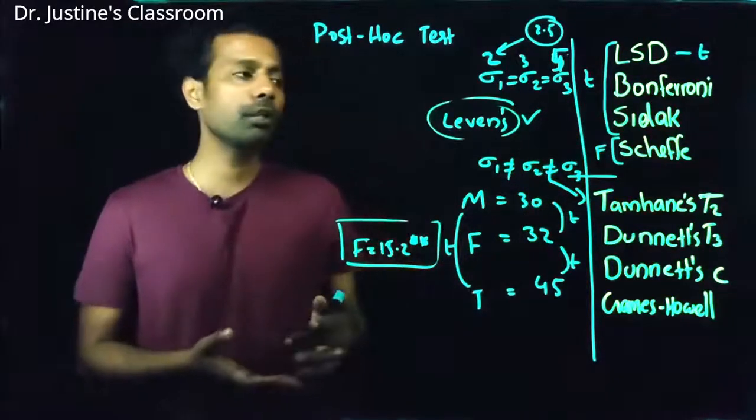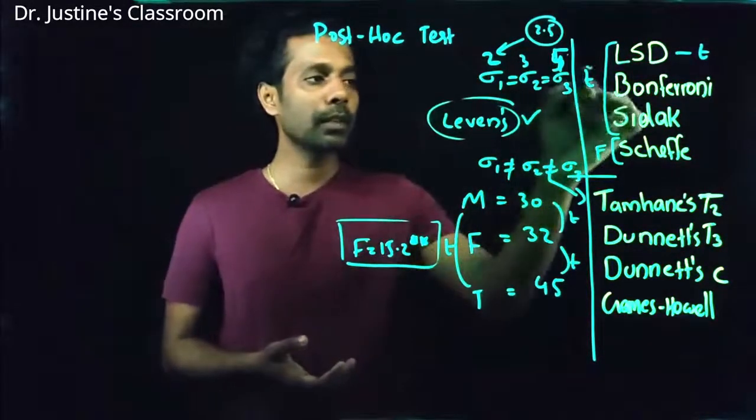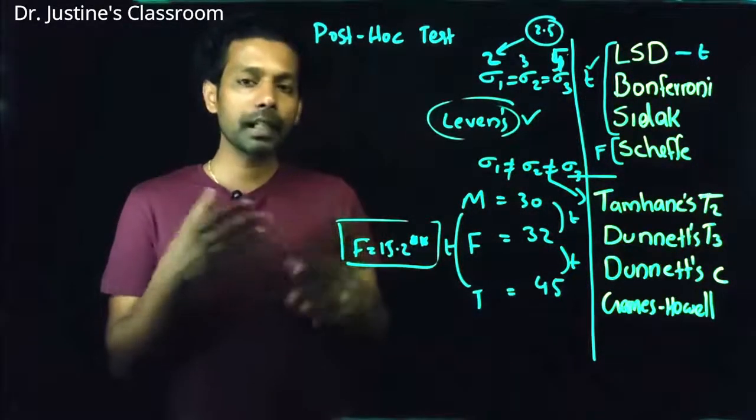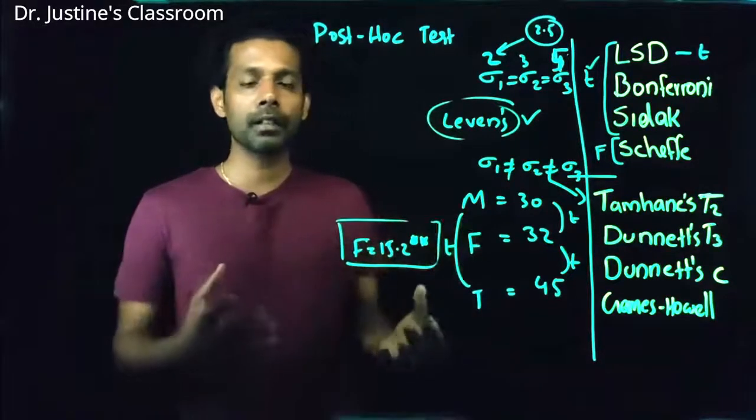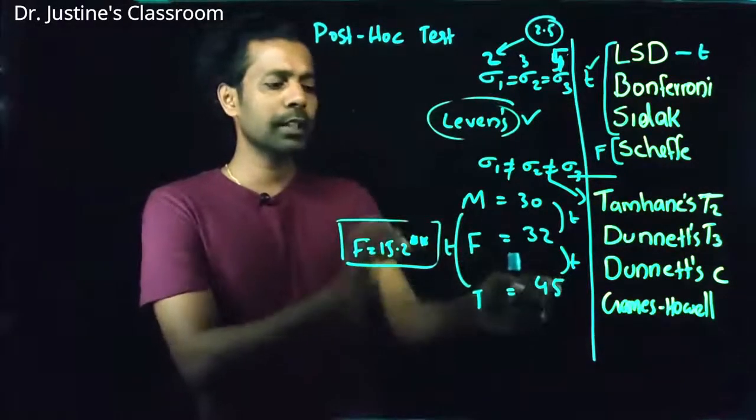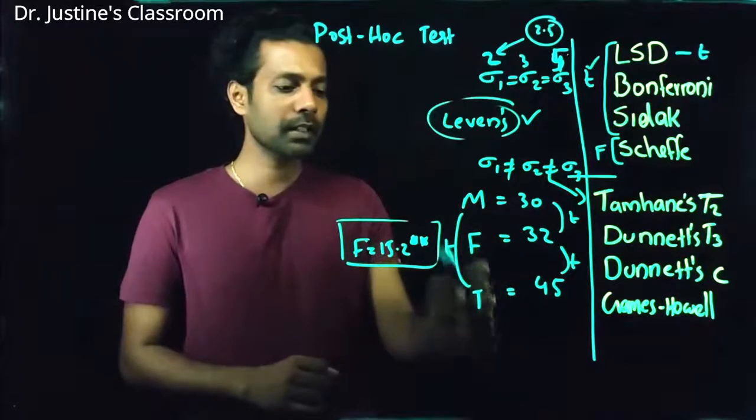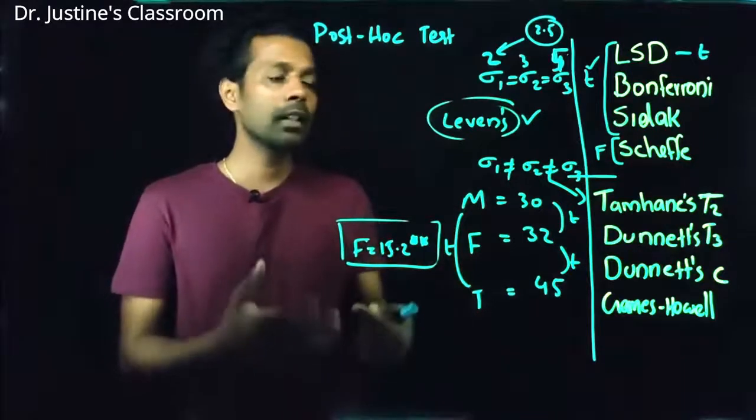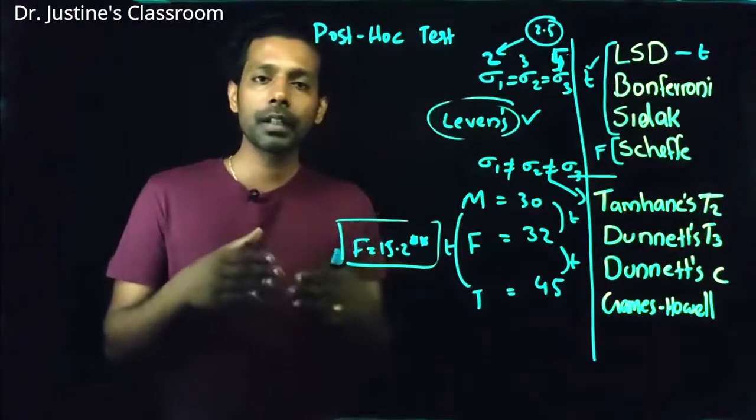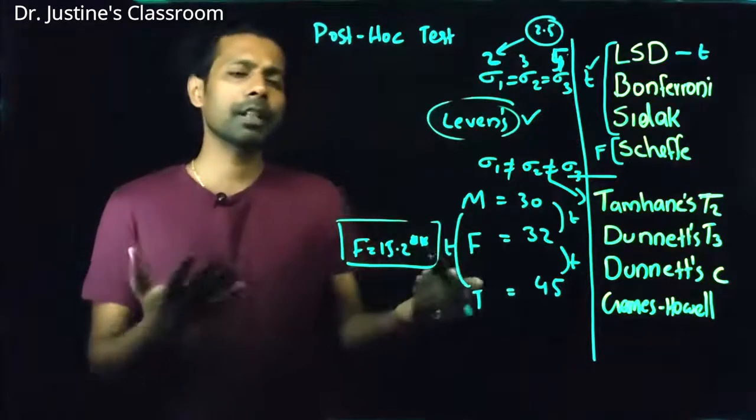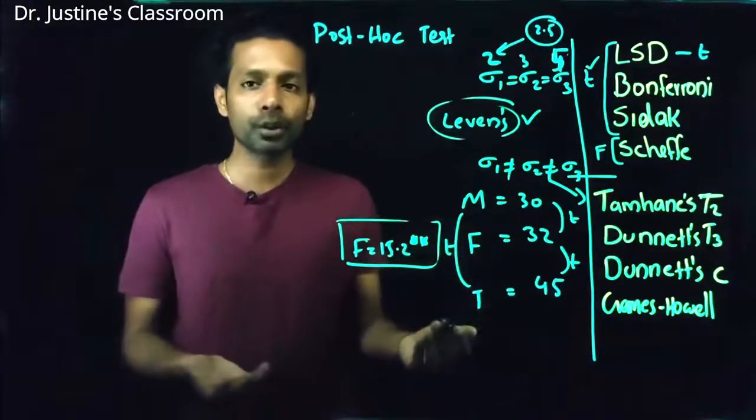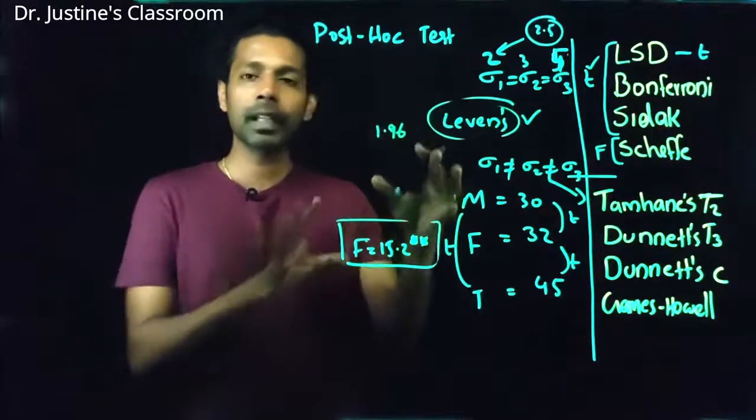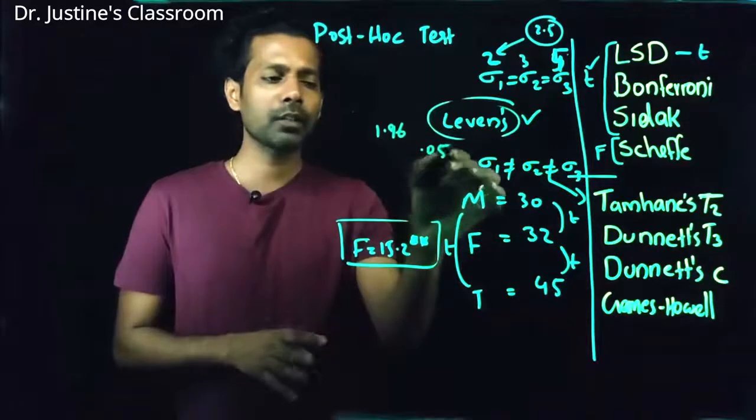So you will get three T values here. Bonferroni is a correction method. You are still using T distribution, and the idea here is the significance level will be readjusted in terms of number of comparisons. Number of comparison means in this context, I have three comparisons: male and female, female and transgender, and male and transgender. So when three comparisons are done, the level of significance will be changed accordingly. For example, when you do a usual two group comparison, assume that 1.96 is a cutoff point to say it is significant at 0.05 level.